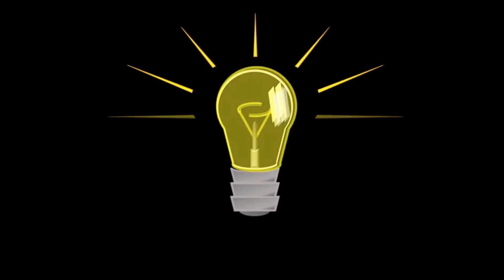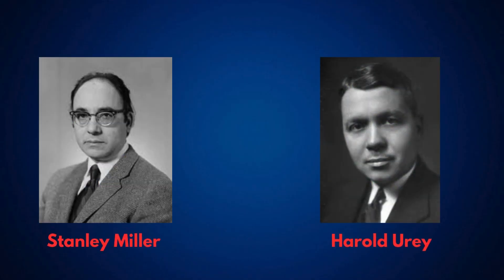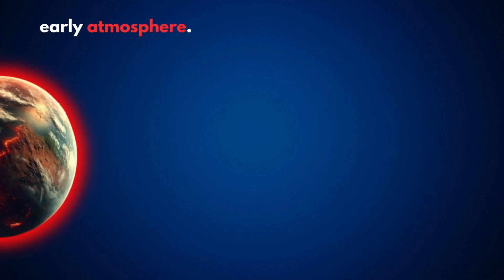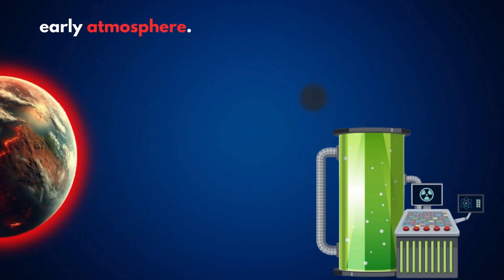One of the biggest breakthroughs came in 1953, when Stanley Miller and Harold Urey ran a now-famous experiment. They simulated Earth's early atmosphere, filling a glass chamber with methane, ammonia, hydrogen, and water vapor, and then sent electrical sparks through it, mimicking lightning strikes.